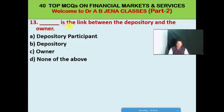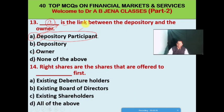Next MCQ: dash is the link between the depository and the owner. A: depository participant, B: depository, C: owner, D: none of the above. A is the right option — the depository participant is the link between the depository and the owner of the security. Next MCQ: right shares are the shares that are offered to dash first. A: existing debenture holders, B: existing board of directors, C: existing shareholders, D: all the above. C is the right option — right shares are offered to existing shareholders first.